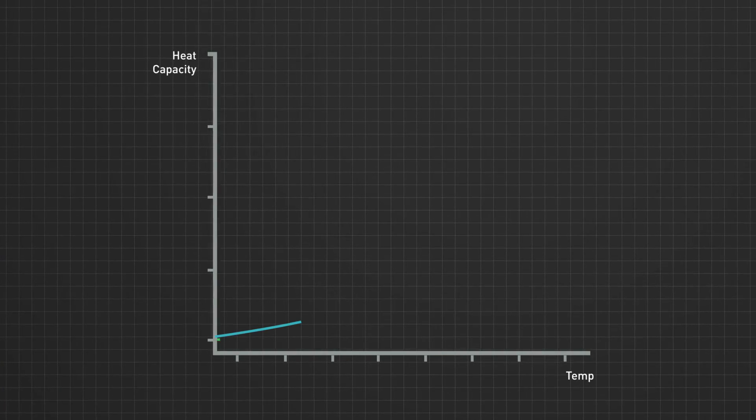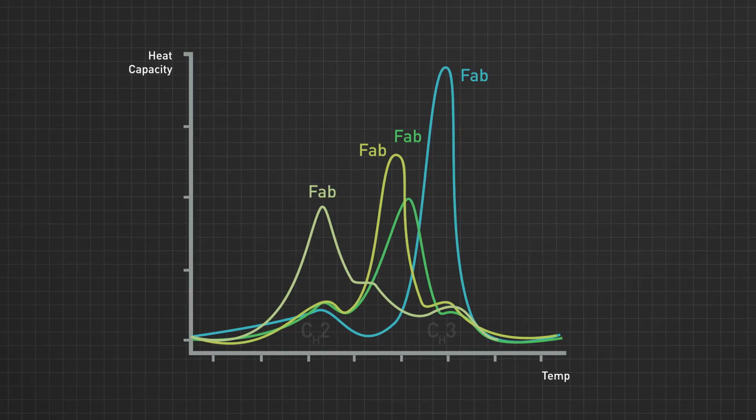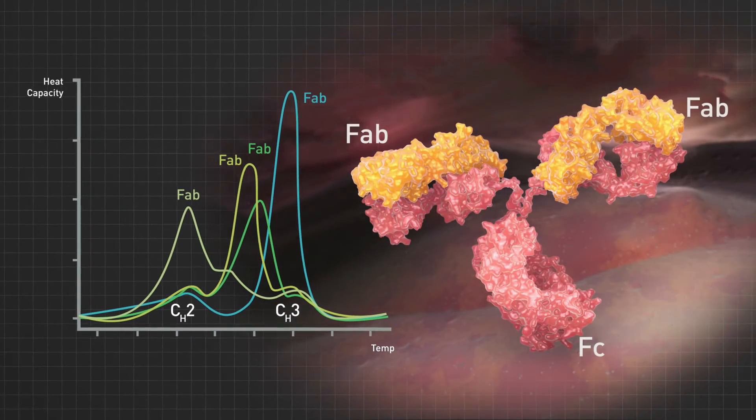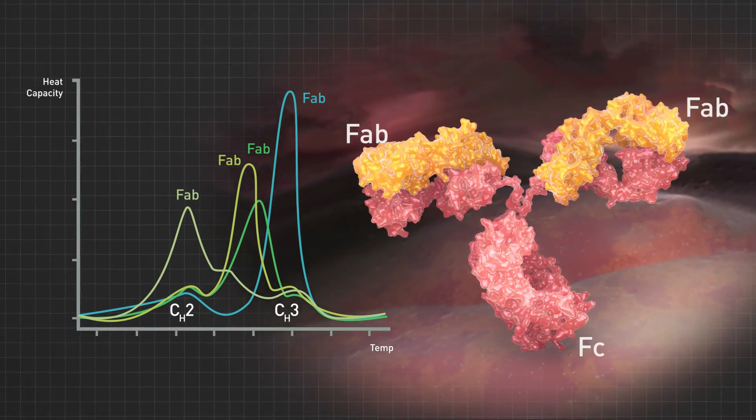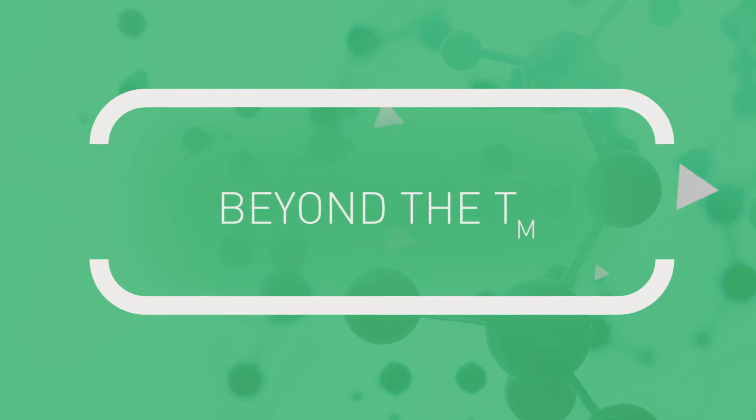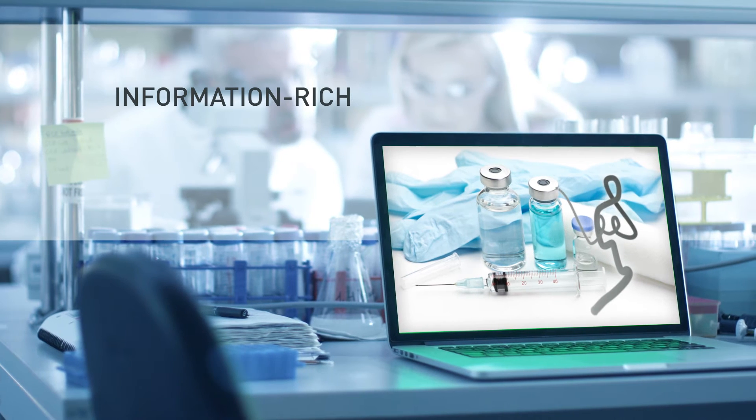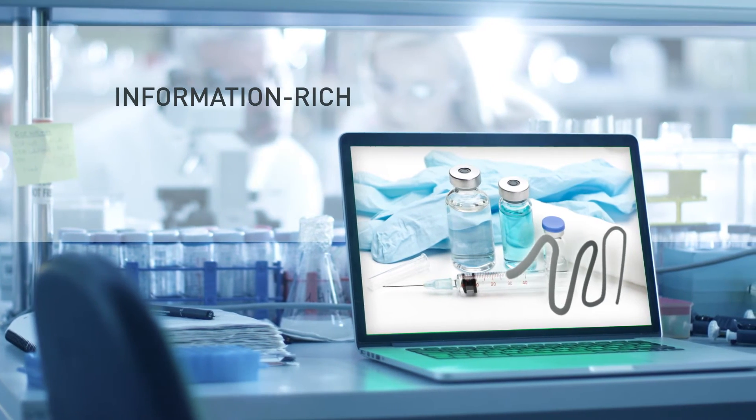DSC is commonly used to evaluate the multiple TMs of large, multi-domain proteins, like antibodies. Beyond the TM, DSC is information rich, especially when compared to other techniques, such as fluorescence.